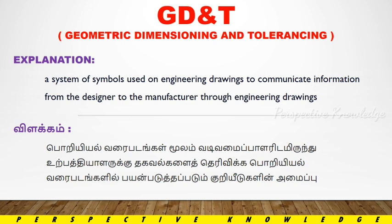Geometric Dimensioning and Tolerance — GD&T are basic symbols used to standardize and follow standards. GD&T symbols help reduce communication gaps. We use them to easily identify the path, identify the value, and identify the properties.